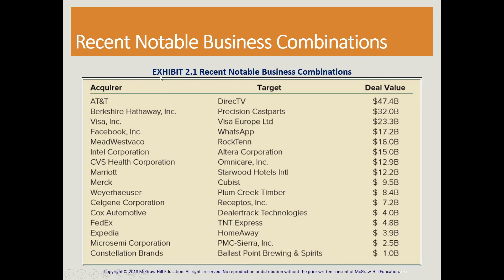We have some examples of the acquirer and the target company that was acquired. Perhaps the one you're most familiar with is Facebook and the purchase of WhatsApp and Instagram. Instagram is not listed here, but that would be an example of a business combination.